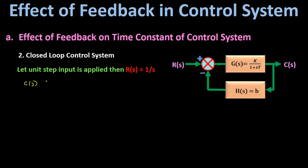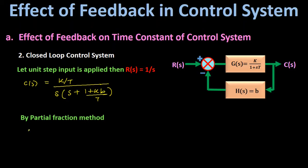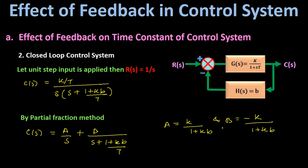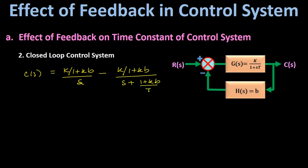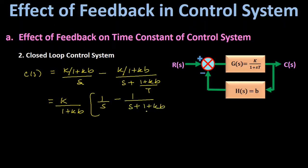Applying the partial fraction method: C(s) = A/s + B/(s + (1 + Kb)/T). Finding constants A and B, and substituting back, the output C(s) = [K/(1 + Kb)] · [1/s − 1/(s + (1 + Kb)/T)]. Factoring out K/(1 + Kb), we get C(s) = [K/(1 + Kb)] · [1/s − 1/(s + (1 + Kb)/T)].